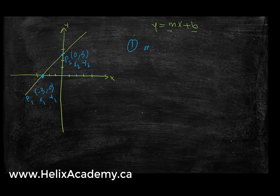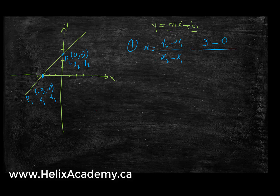So my slope equals y2 minus y1 over x2 minus x1, which is 3 minus 0 over 0 minus negative 3. Negative times negative is positive, so I get 3 over 3, which equals 1. My slope is equal to 1.